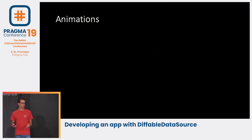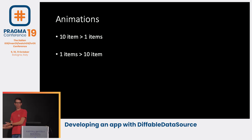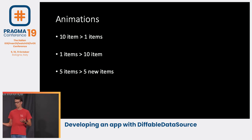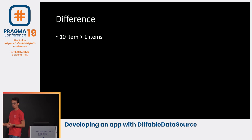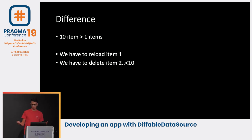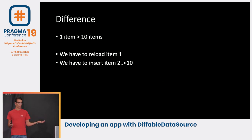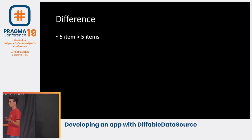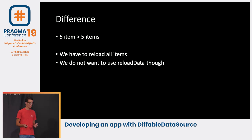What about if you want to animate changes? For example, going from 10 items to one, from one item to ten, or from five items to five different items. Before we animate, let's dive deeper into how we can modify this. Going from 10 to 1: we have to reload the first item because we never know if it's still the same speaker, then delete items 2 through 10. Going from one to ten: reload the first item then insert items up to 10. For five items to five new items, we want to reload all of them, but we cannot use reloadData because we won't get the nice animation Apple provides.